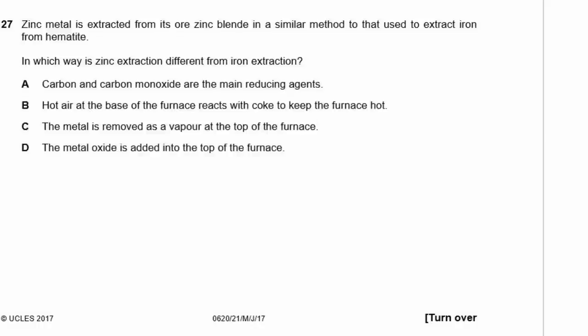Question 27. Zinc metal is extracted from zinc blende in a similar method to extracting iron from hematite. In which way is zinc extraction different? A — carbon and carbon monoxide are the main reducing agents — same for both. B — hot air at the base reacts with coke to keep the furnace hot — same. C — the metal is removed as a vapor at the top of the furnace — no, the metal is a solid removed at the base. D — the metal oxide is added at the top — same. So C is the difference, and the answer is C.